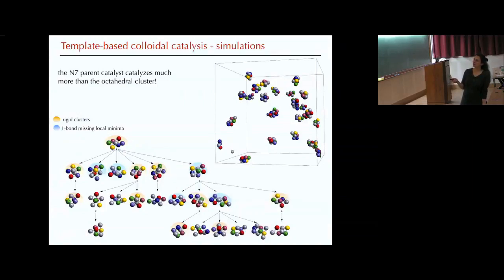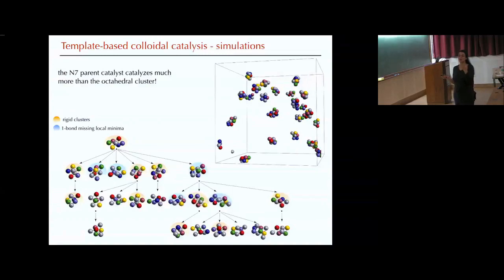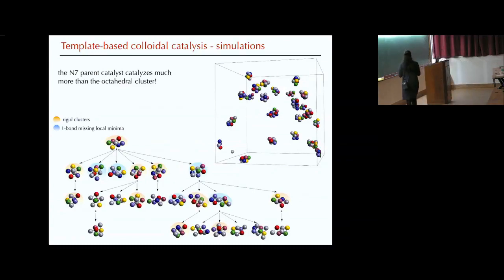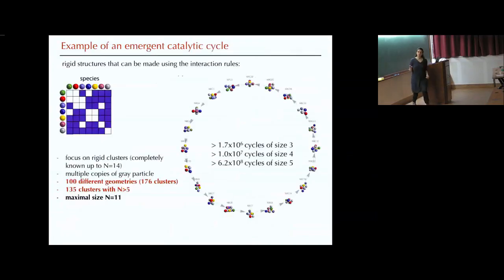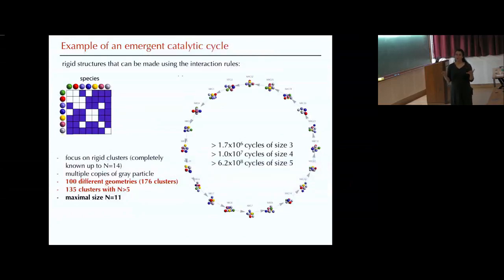The orange background means we are getting rigid clusters from our database. Blue means we end up with local minima. Without color, it's just junk that doesn't do anything. Basically what we realized is that we have to go back to our matrix and our huge database of clusters, and ask: what are all the possible rigid structures that we can make using this matrix if we allow multiple copies of the gray particle? Once you do that, we end up enumerating all the things that can happen — we can have, with these rules, 100 different geometries — basically 176 different clusters, with a maximum size of 11.